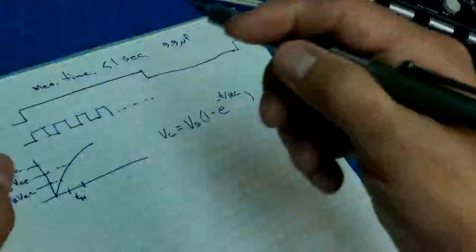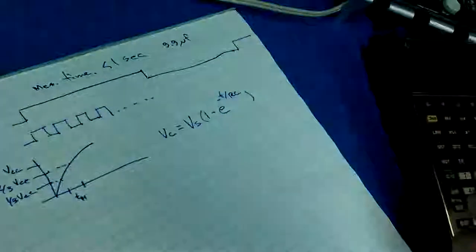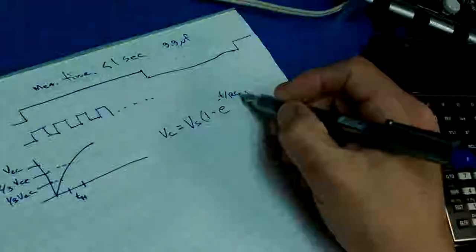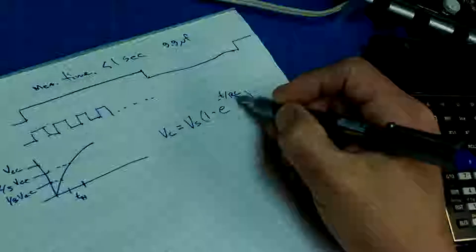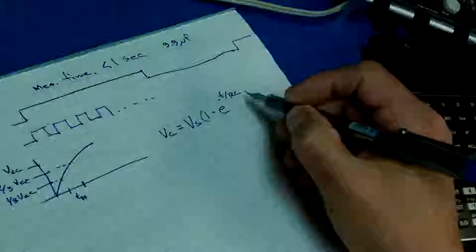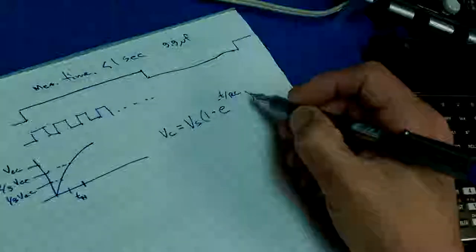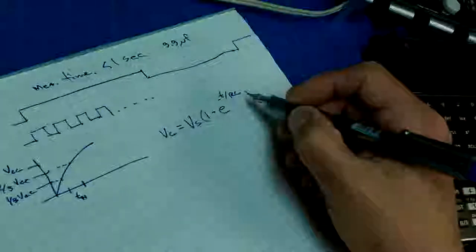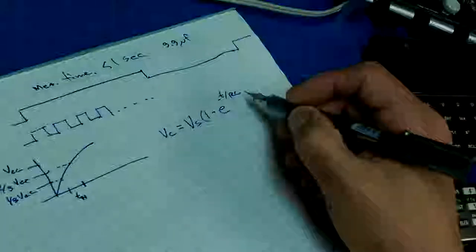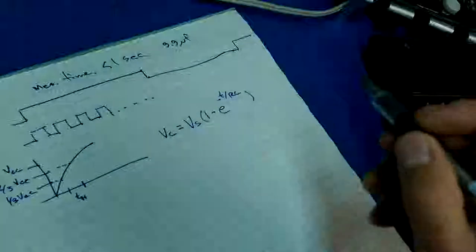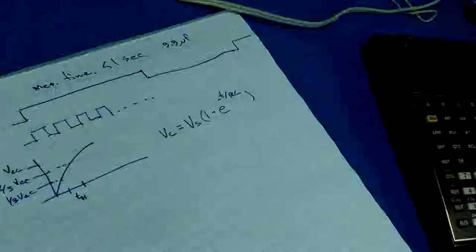So every second at the largest range we're going to be taking a new measurement. The other constraint revolves around R, determined by maximum values from the datasheet, in order to not overburden the 555 timer with too much current coming into the trigger and threshold pins.